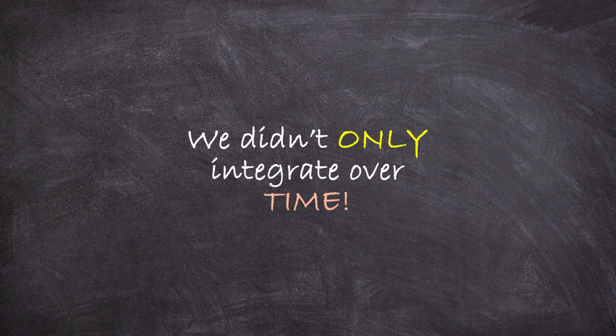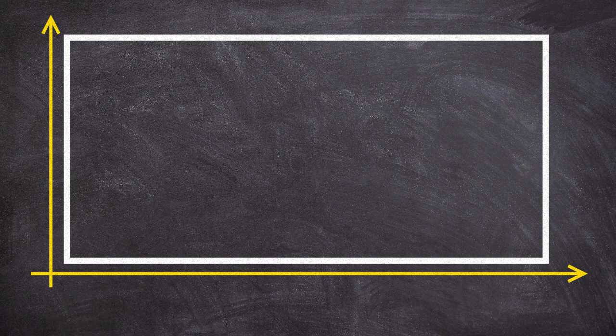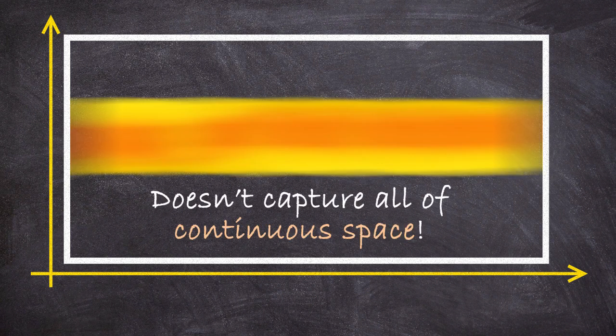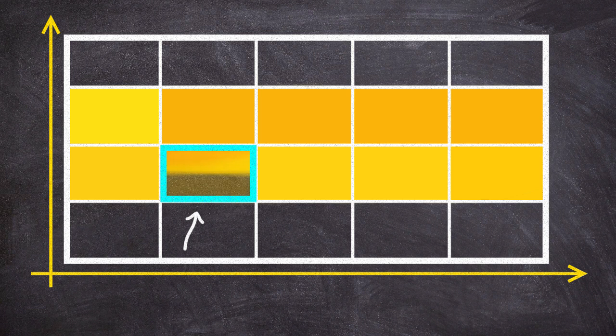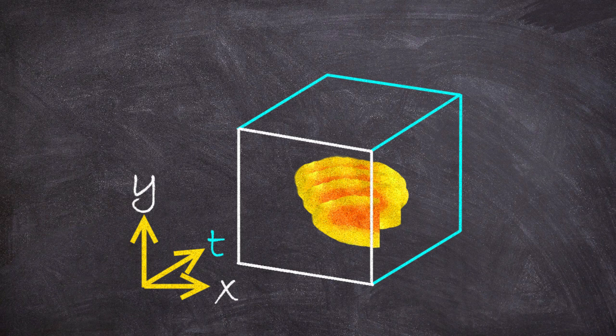However, this temporal integration wasn't the only integrating or averaging we did. A digital camera doesn't collect an infinitely precise continuum of x, y data within its viewport. Instead it only has a finite number of pixels in the x and y direction and it's basically spatially integrating over a small neighborhood around each pixel.